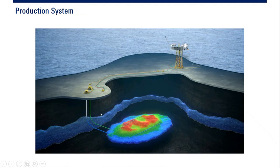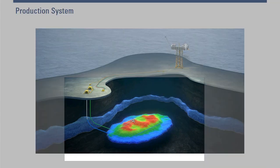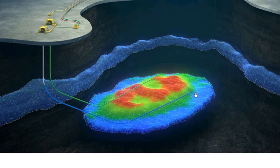This is the production system in an offshore environment. We have a platform here, and then a subsea wellhead or subsea Christmas tree. Down there we have the reservoir. You can see the blue line — we call that the aquifer, the water layer. The green zone is the oil reservoir, and the red zone is the gas cap.